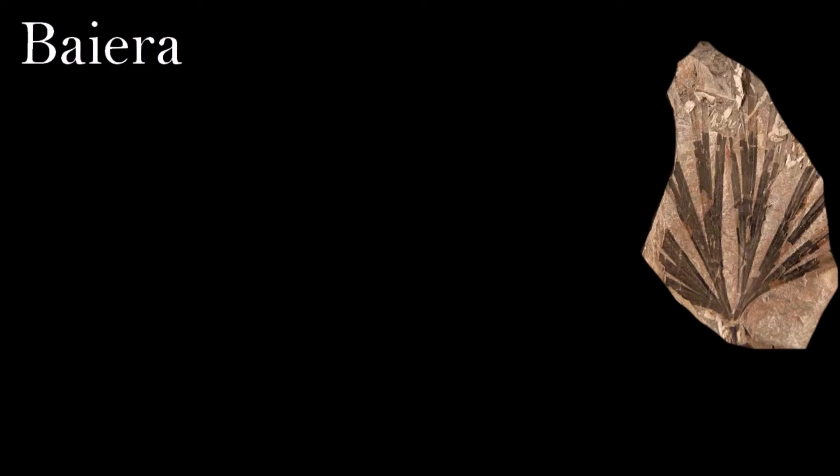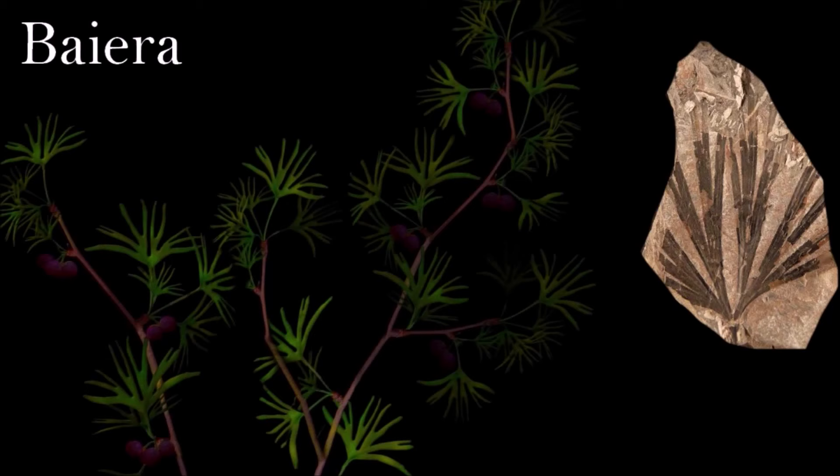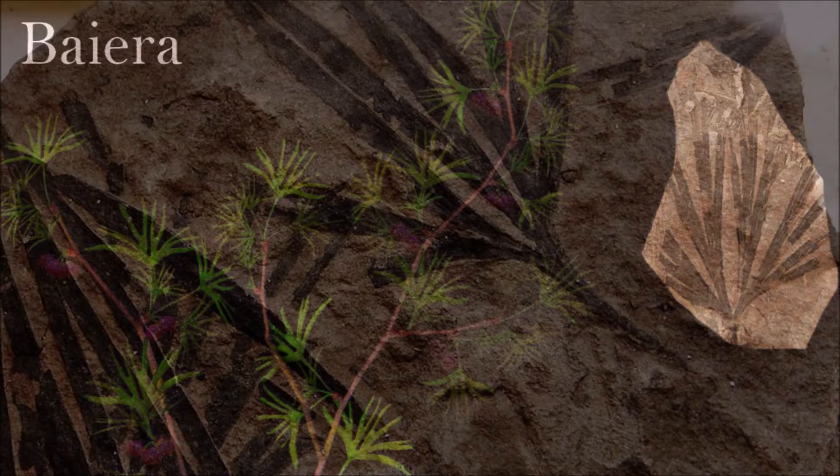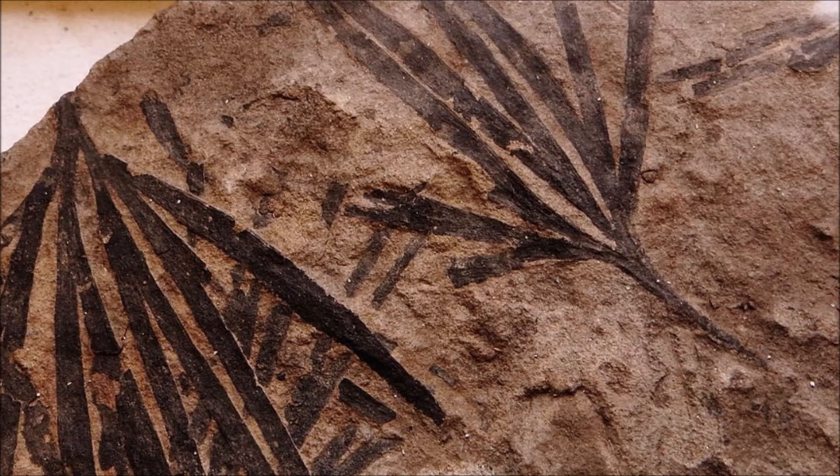Ginkgos are not only living fossils — they form part of an ancient group of flowerless seed plants called the Gymnosperms, which also include conifers and cycads. They have a fossil history stretching back more than 200 million years. During this time, evolution has created countless variations on the theme of fan-shaped leaves. With its highly divided leaves, Baiera looks very different from its living relative, the well-known Ginkgo or Maidenhair tree.